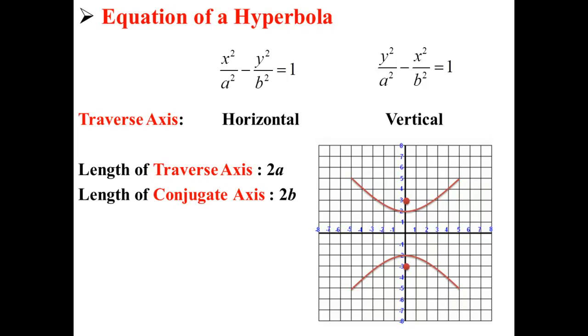Here we have the standard equations of a hyperbola. If the traverse axis runs horizontal, then the equation is x squared divided by a squared minus y squared divided by b squared is equal to one. If the traverse axis is vertical, then the equation is y squared divided by a squared minus x squared divided by b squared is equal to one.